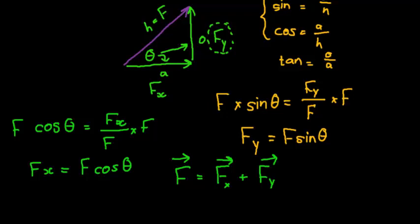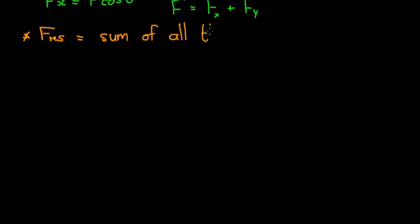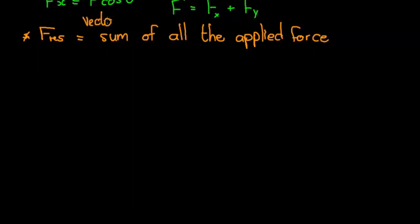Another important thing we learned is that the resultant vector is equal to the vector sum of all the applied forces acting on an object. Another way of looking at this is that the resultant vector equals mass times acceleration — this is Newton's Second Law.